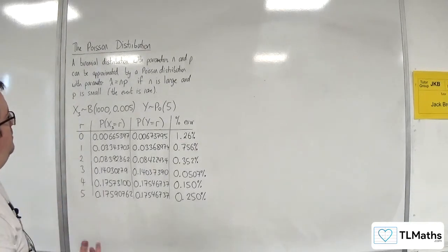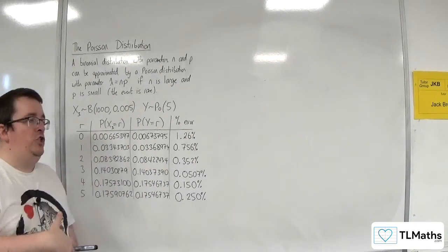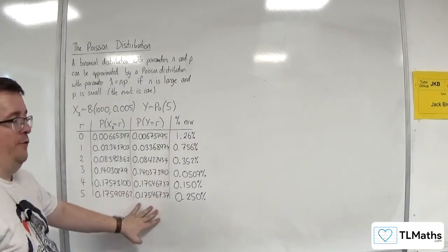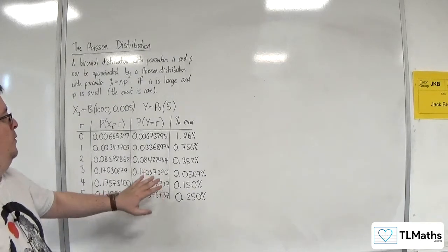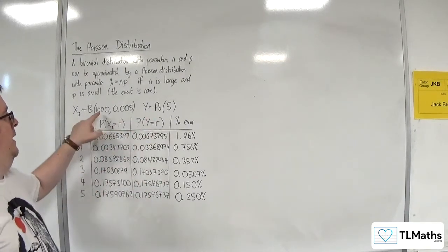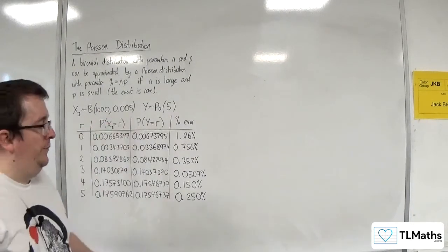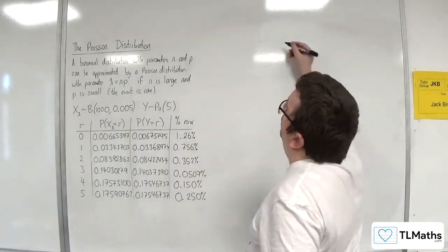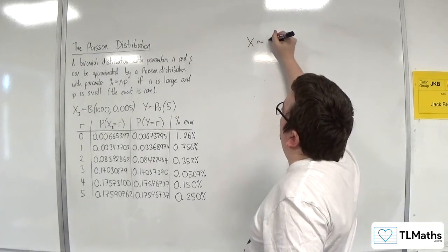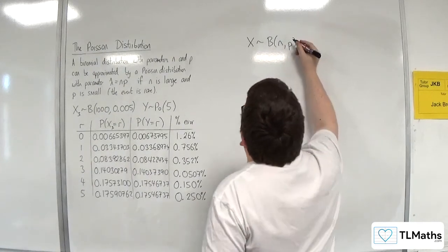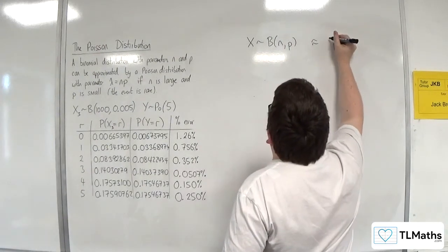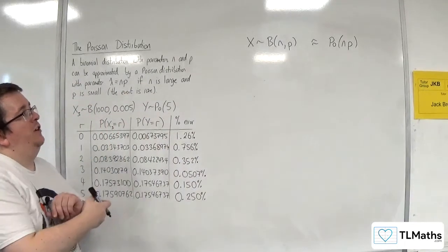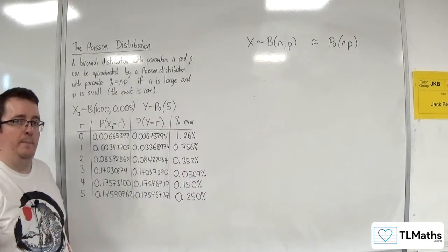So what I'm doing is I'm increasing n, I'm reducing p, but the Poisson distribution here with lambda 5 has remained fixed. That's remained the same. So these two are becoming closer as I increase that and decrease that. So if n is large and p is small, then x is a binomial distribution with n and p. And this is going to be approximately a Poisson distribution with parameter n times p if n is large and p is small.